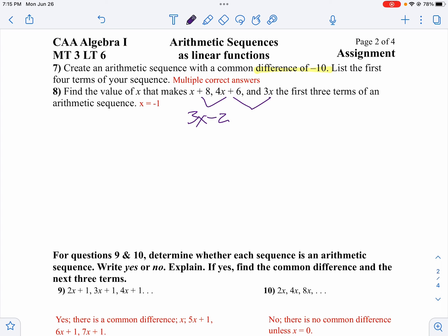But then when I look at from 4x plus 6 to 3x, notice I'm going down by x, and I'm going down by 6. Because 4x minus x equals 3x, 6 minus 6 is 0. Well, these are my common differences, they have to be the same, so that's where I get an equation out of that. In other words, 3x minus 2 equals negative x minus 6.